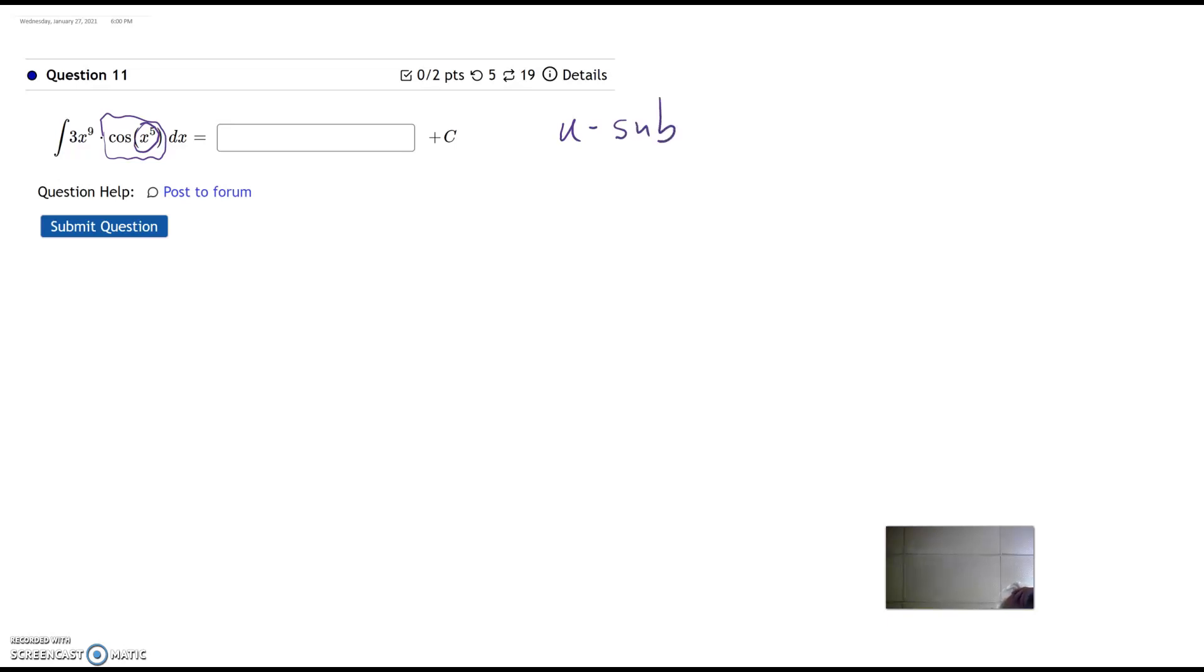Okay, but also on the other hand, I have a 3x to the 9th power times the other thing. Now, u substitution is not going to take care of all that. It's not going to take care of this entire 3x to the 9th. And so that tells me partial fractions. And so actually, we have to use both on this one.